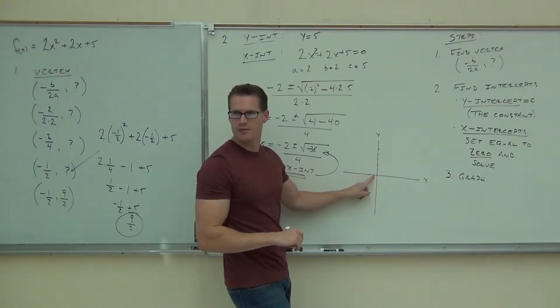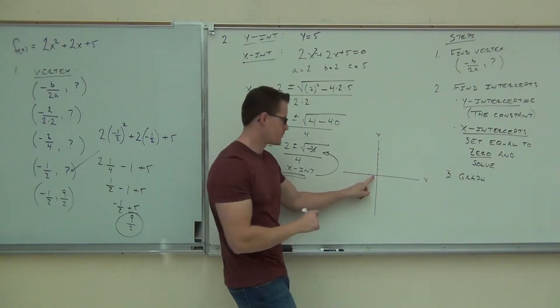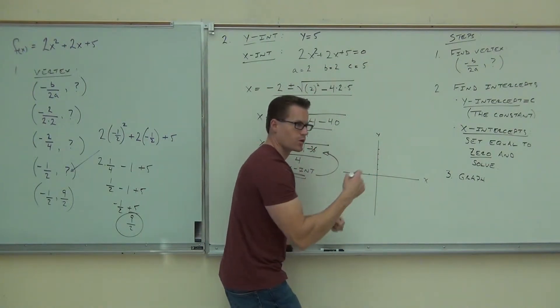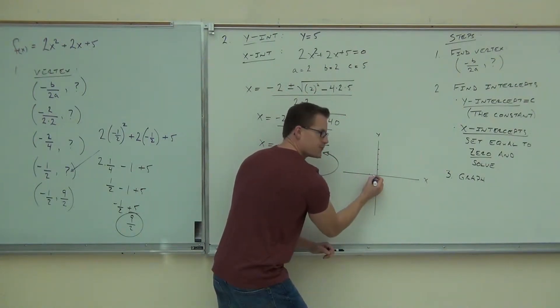Translate that to a mixed number if you'd like. Nine halves is four and a half. So here you go, watch on the board. We've got negative one half, we've got nine halves.